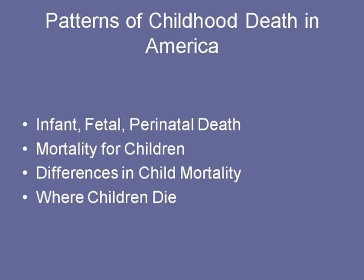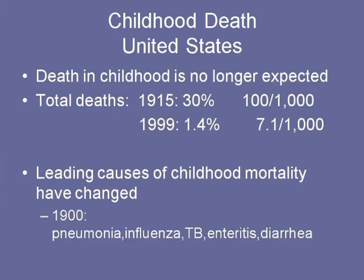Looking at how children die in the United States: compared to 100 years ago, childhood death is no longer expected. The incidence of childhood death in 1915 was about 30% — 1,000 children could be expected not to survive through childhood. By 1999 it had dropped significantly, mostly because of antibiotics. In 1900, the leading causes of childhood death were pneumonia, influenza, TB, enteritis, and diarrhea, and with better supportive care, antibiotics, and immunizations, we largely wiped those out.